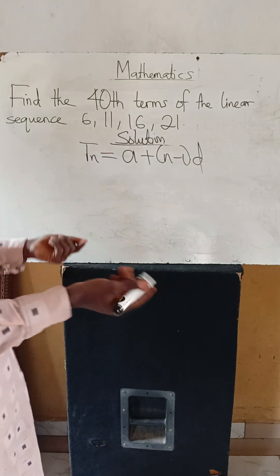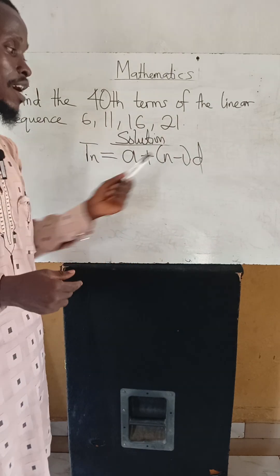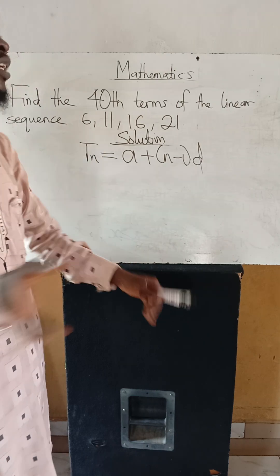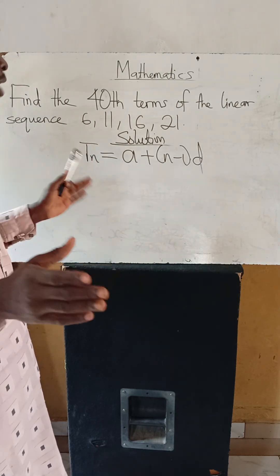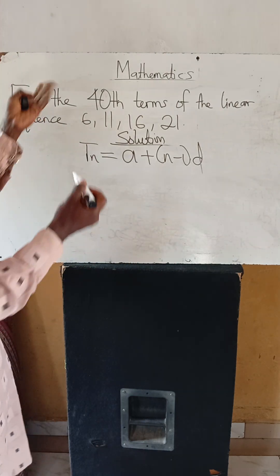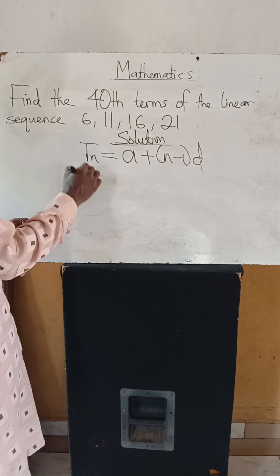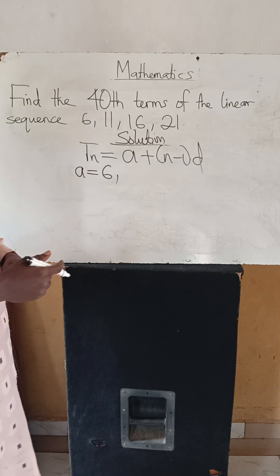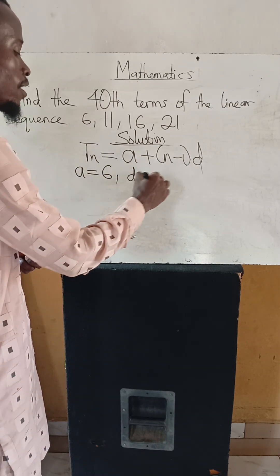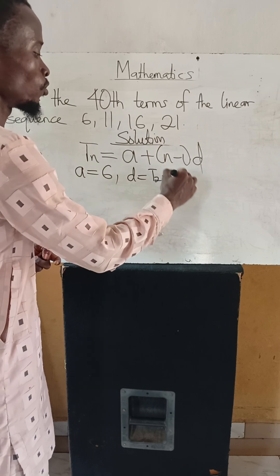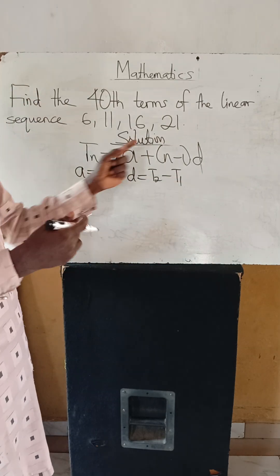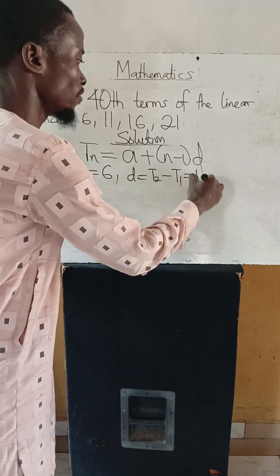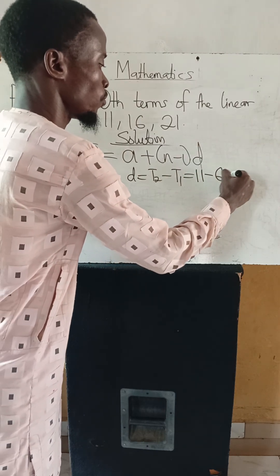The first things we need are the first term and the common difference. Once we know those two values, we can easily find any term. From this question, our first term is 6. The common difference is the second term minus the first term, or the third term minus the second term — that is 11 minus 6, which gives us 5.